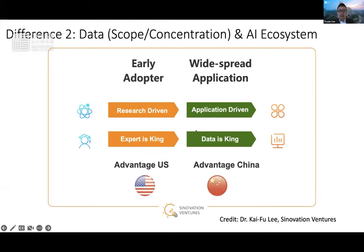This is an interesting comparison by Dr. Kaifu Lee in his book on the difference in AI development between the US and China. It definitely echoes my own experience working in Silicon Valley and also in top tech firms in China. The US firms are more research-driven and expert-driven. If you look at all the top AI models and frameworks — from PyTorch, to the recent GPT-3 model, the diffusion model, and so on — they are mostly by pioneers like Jeff Hinton and Yann LeCun.